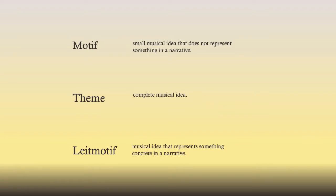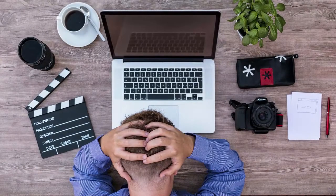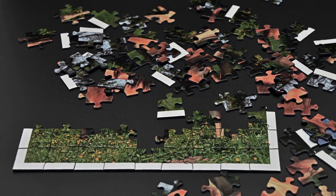So we have our motif, we have our theme, and we have our leitmotif. What do you do with this information? Someone is going to come to you and say, I have this film or video game — make a soundtrack for me. They're going to expect you to know what to do with that information. Your job is to take that and come up with pieces you can put together into a soundtrack. In the beginning it might feel overwhelming, but you have tools at your disposal, and this is one of them.